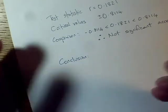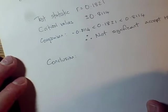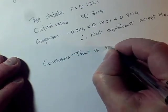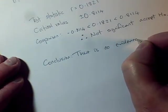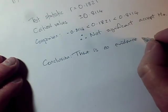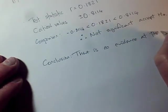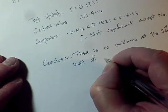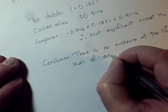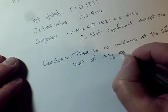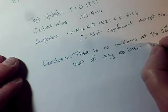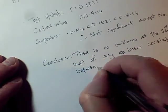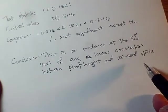Conclusion is, we're either going to word this, there is evidence, or there is no evidence, because we didn't get a significant result. It is there is no evidence. We should state our significance level. So there is no evidence at the 5% level of, we were testing for any kind of association, so we'll say any correlation, we could say linear correlation, because that's what we were testing for, any linear correlation between plant height and 100-seed yield.